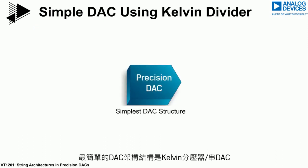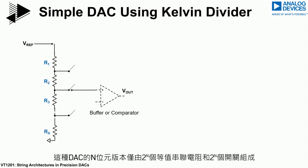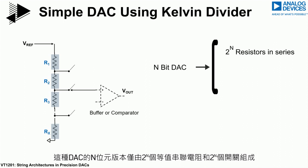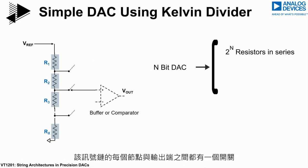The simplest DAC architecture of all is the Kelvin divider, or string DAC. An n-bit version of this DAC simply consists of 2-to-the-n equal resistors in series and 2-to-the-n switches, each one located between each node of the chain and the output.